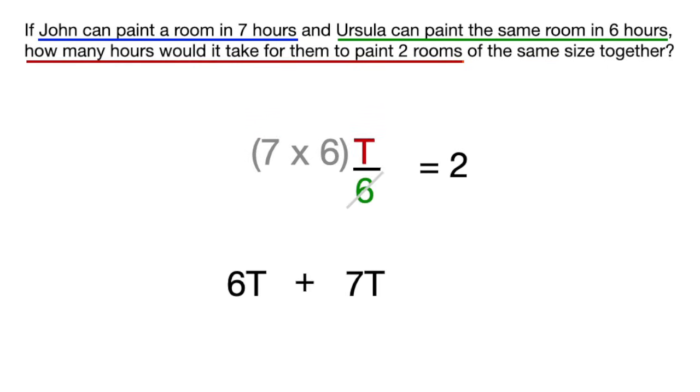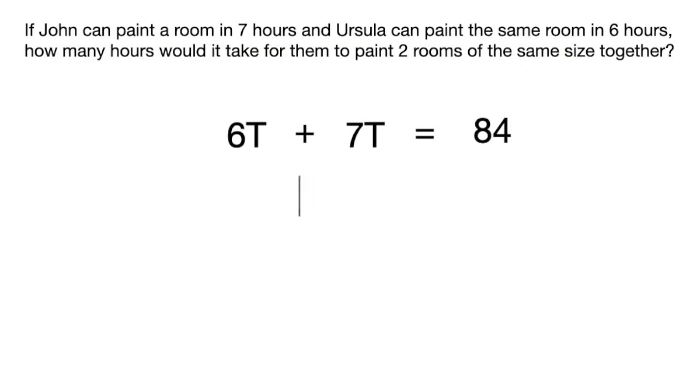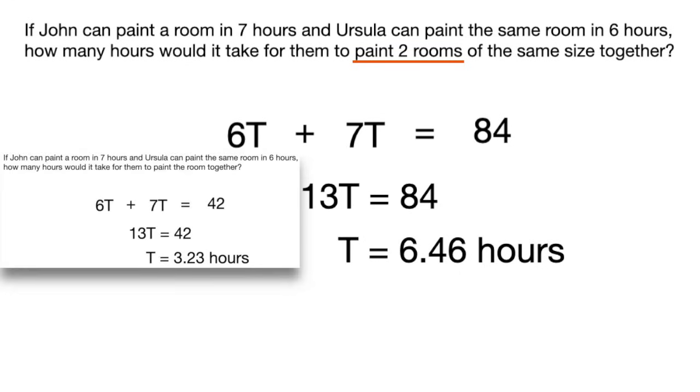And this time, we get t equals 6.46 hours as the total time required for both of them to paint two rooms together, which makes sense because if you remember from the first problem where they were painting one room together, it was 3.23 hours, and now it's double the time. Simple as that.